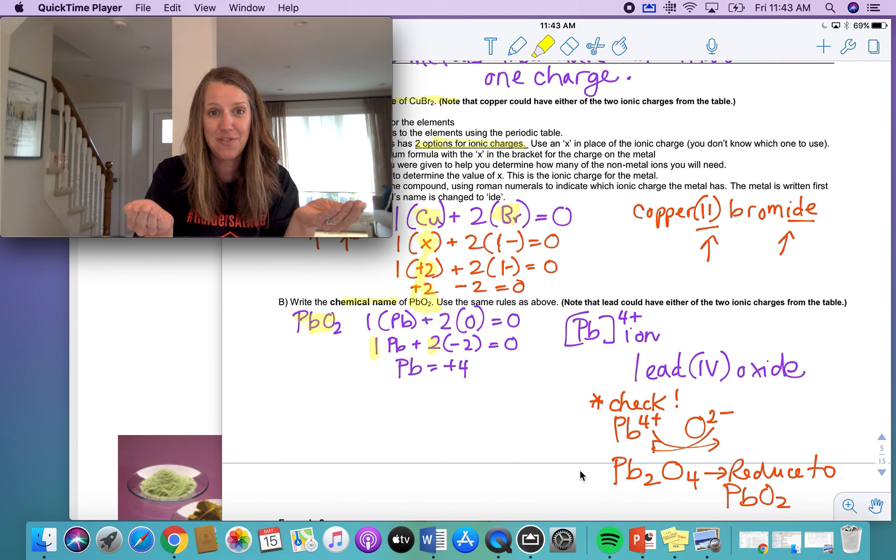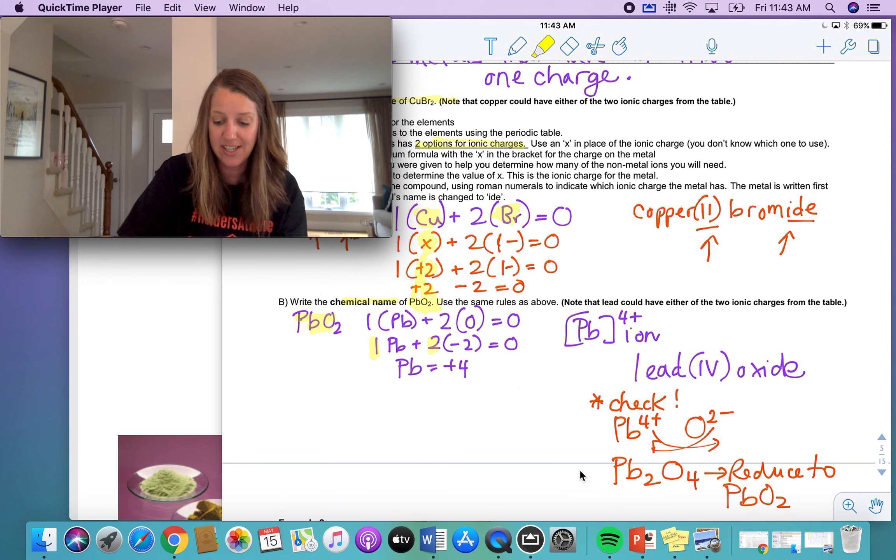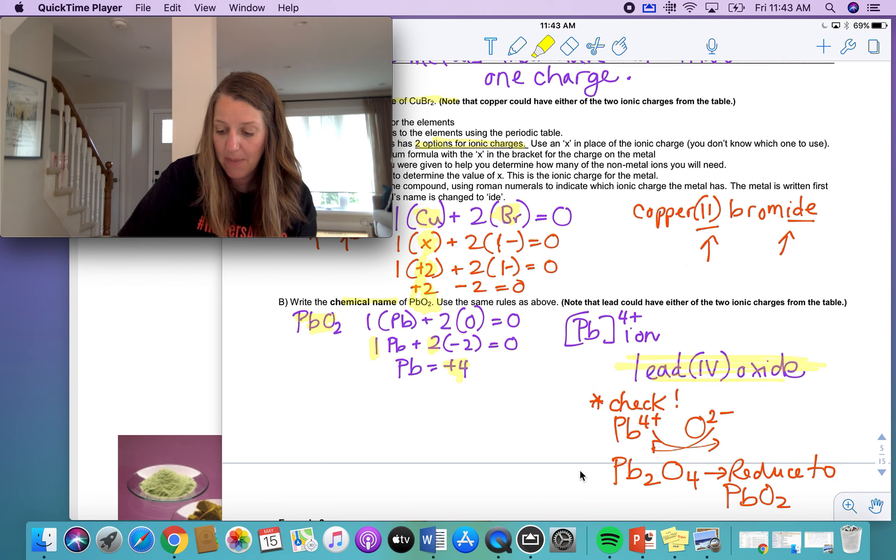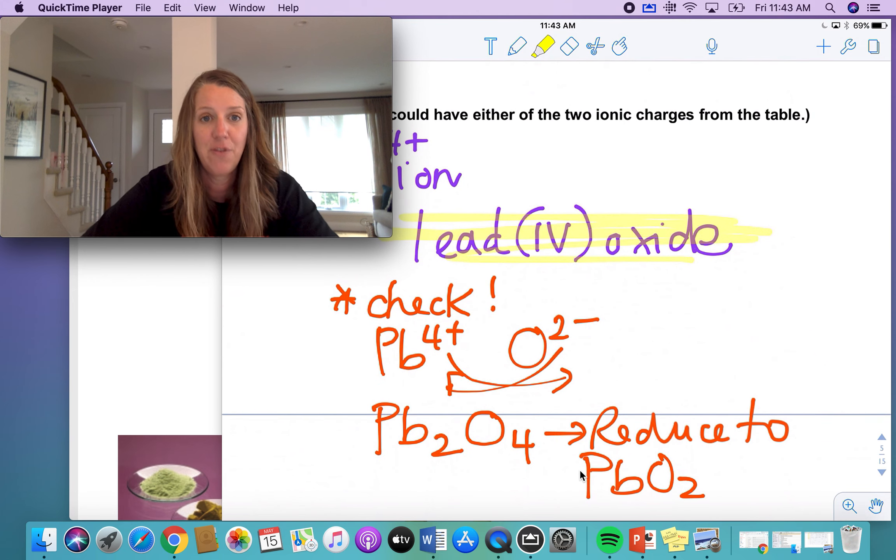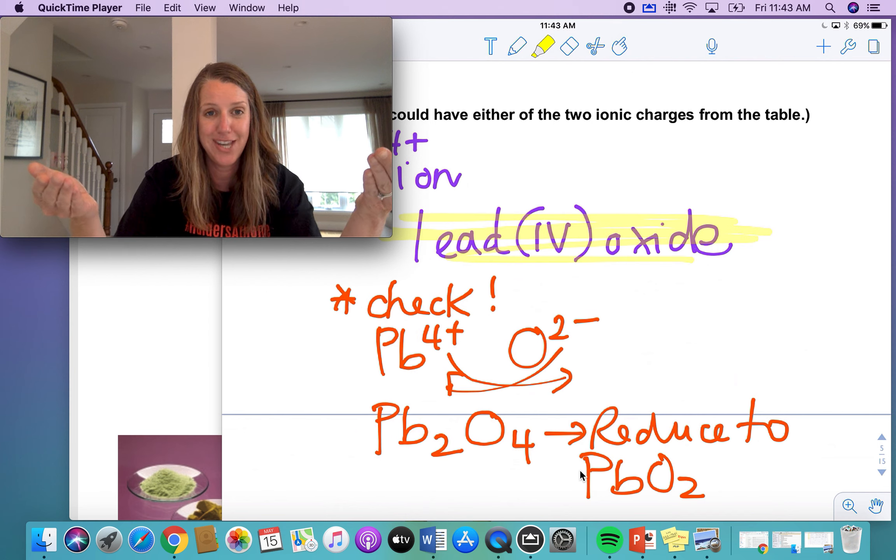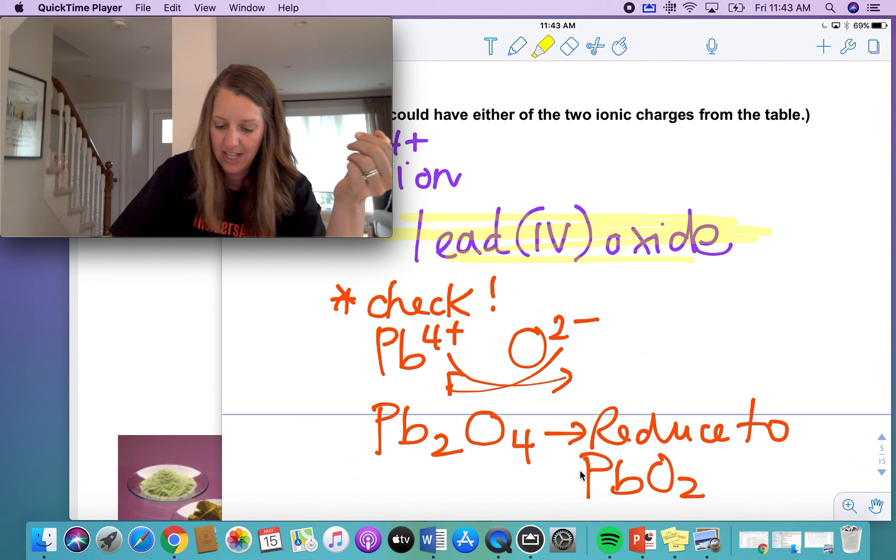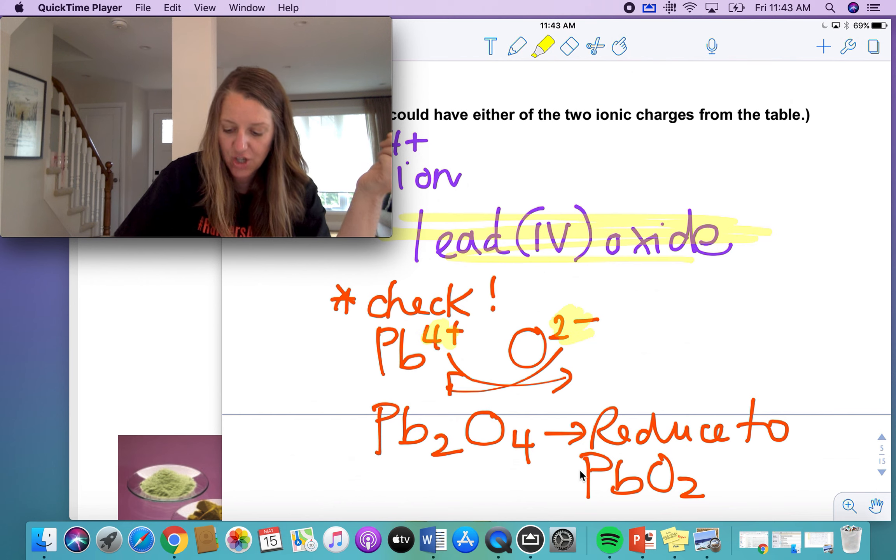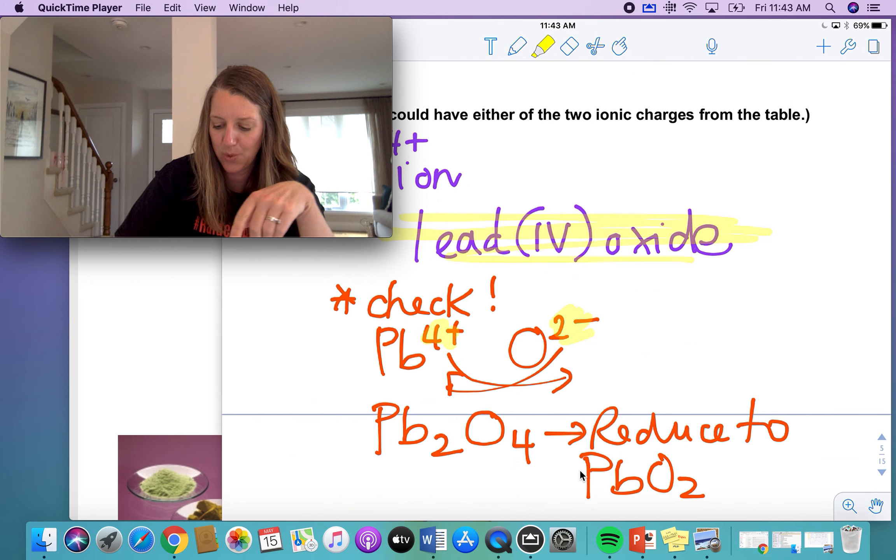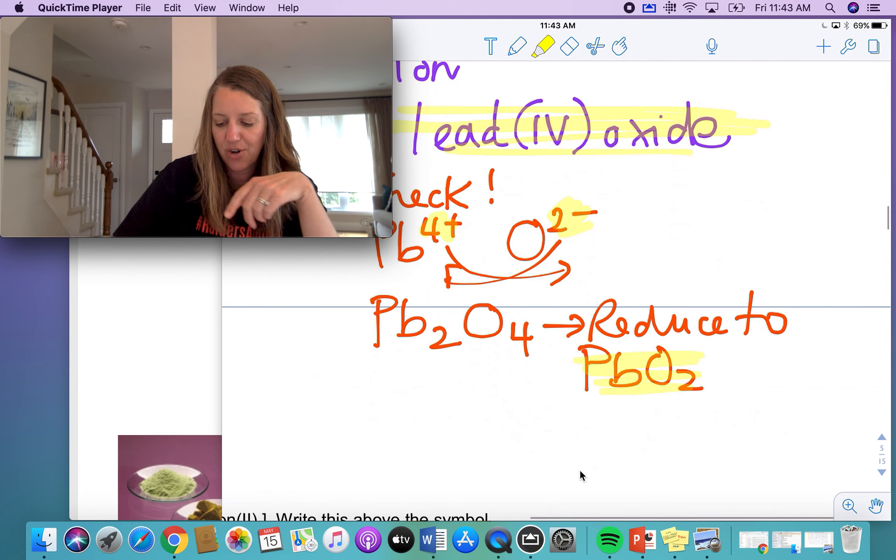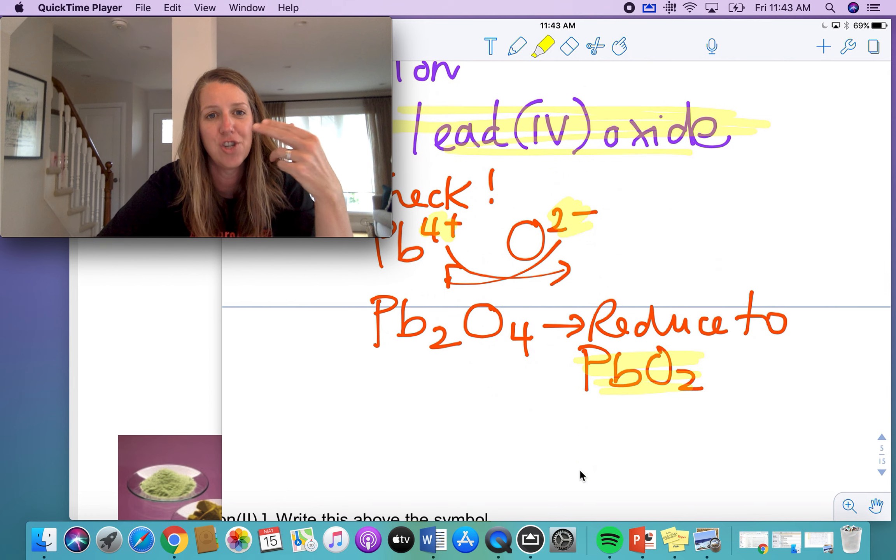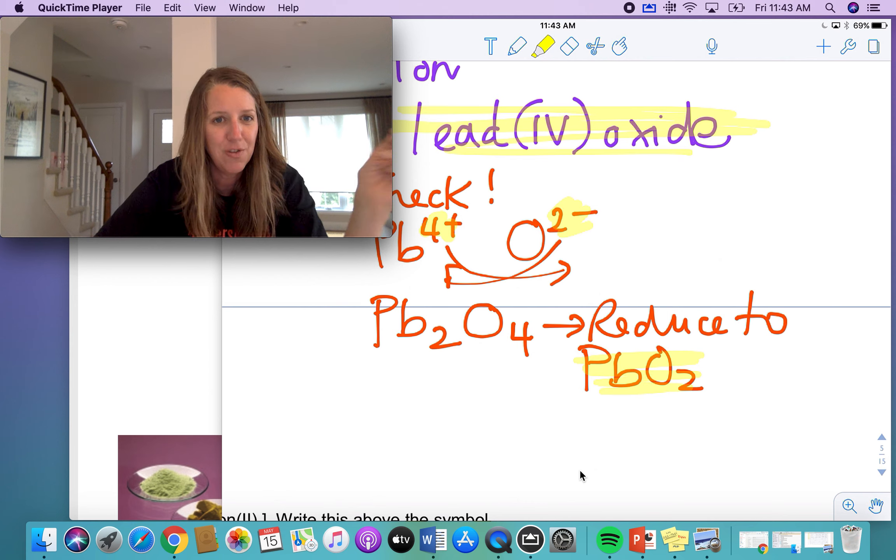Plus four, minus four, the sum of those charges is equal to zero. So therefore, when I write my compound, it's lead four oxide. If you want to do the reverse, because then of course, the next question will be given the name, can you write the formula? Sure. Lead four plus oxygen two minus, do the crisscross rule and reduce it. And your compound is PbO2. And you've just proved the work that you've just solved for above.